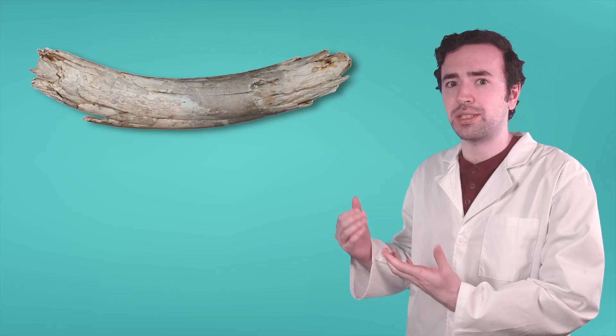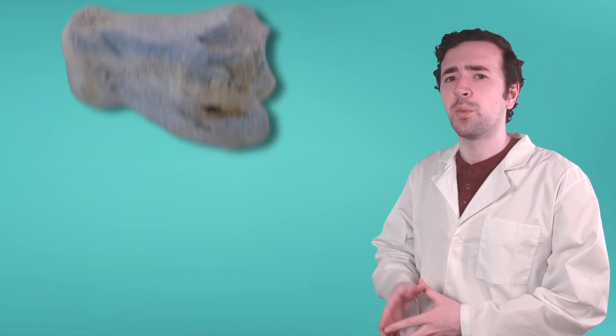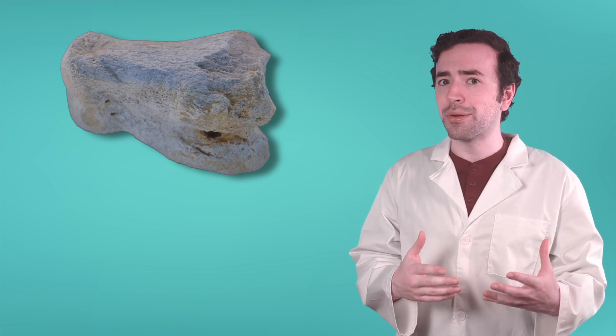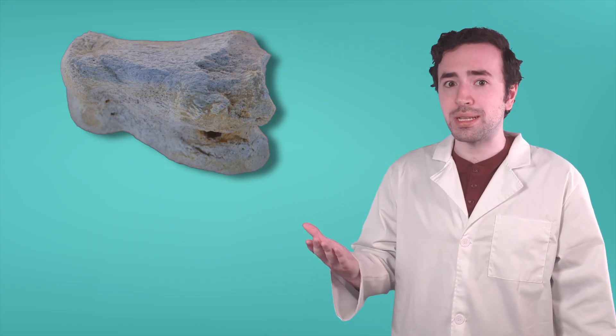The body fossils paleontologists find are usually just small pieces of a living thing, like a woolly mammoth's tusk, a dinosaur's tooth, or just one lonely toe bone. Paleontologists have to piece these clues together like a puzzle, except without the picture on the box and with most of the pieces missing.